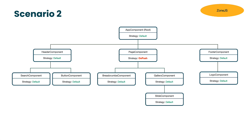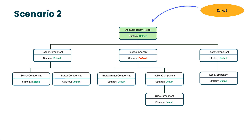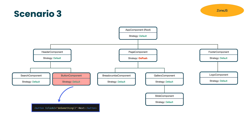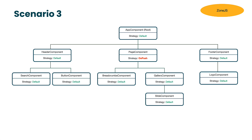Scenario two: one component has OnPush strategy. If an async event happens outside the page component tree — for example in the button component — once the event handler executes, Zone.js notifies Angular. Angular starts checking component views until it reaches the one with OnPush strategy. If that component is not dirty, Angular will not check its view or its children's views. It will only check children of header and footer components.